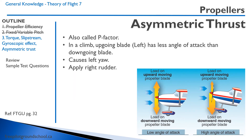Lastly, we have asymmetric thrust, or P-factor. In a climb, the up-going blade on the left has a lower angle of attack than the down-going blade on the right. So the right side of the propeller creates more thrust than the left, causing a left yaw — we apply right rudder in a climb. In level flight, the angle of attack of both blades is equal, but in a climb the down-going right blade takes a greater bite out of the air than the up-going left blade.